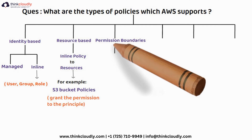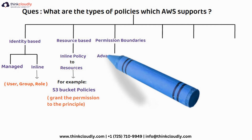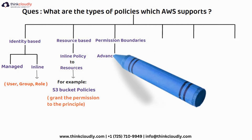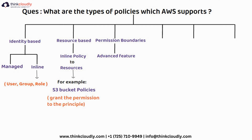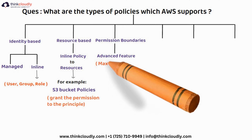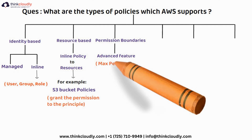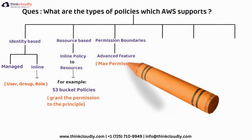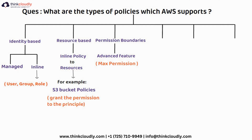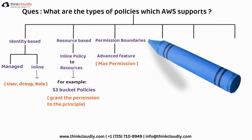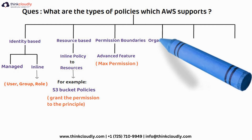The third type is permission boundaries. These are an advanced feature of AWS used to set maximum permissions for identity-based policies, specifically for users.